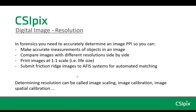You can compare two images with different resolutions side by side. You can print images at a 1-to-1 scale, meaning life size. And you can submit friction ridge images to AFIS systems for automated matching. Determining resolution can be called image scaling, image calibration, or image spatial calibration.